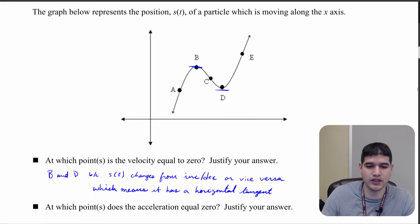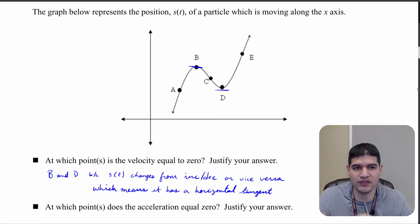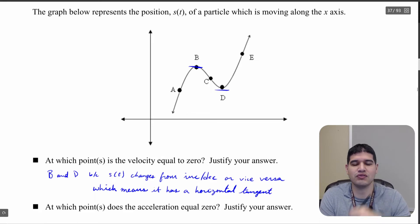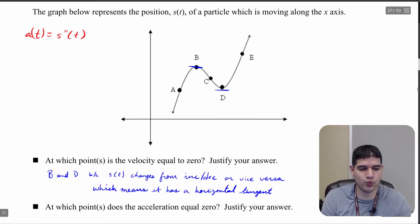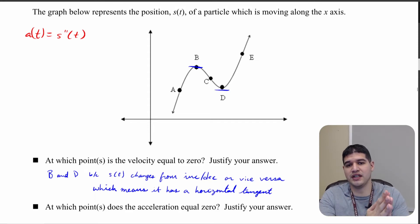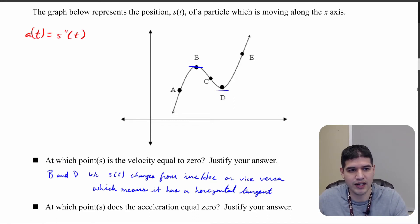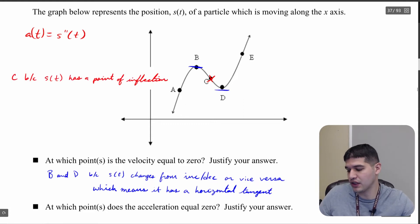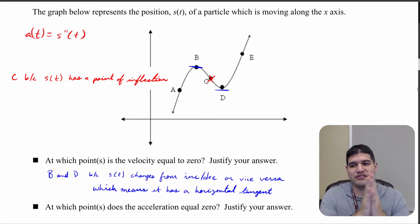At which point does the acceleration equal zero? We know acceleration equals zero when velocity is changing, but we're given s of t. Since a of t equals s double prime of t, we're looking at the connection between the second derivative and the original function — specifically where it changes concavity. We're changing concavity at point c, so c is the point where acceleration equals zero, because s of t has a point of inflection there.